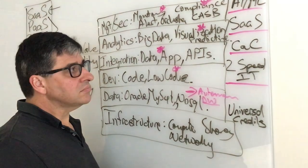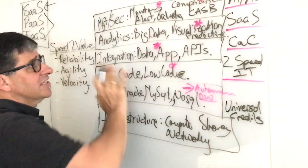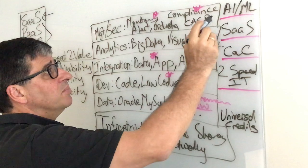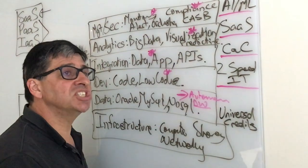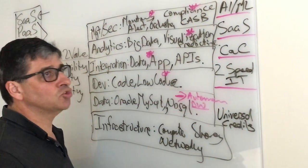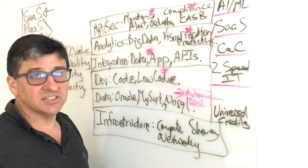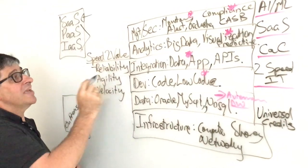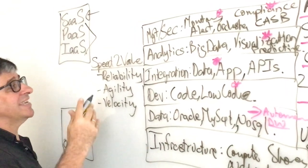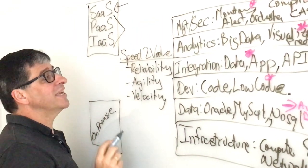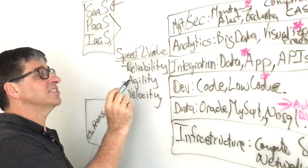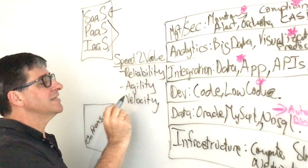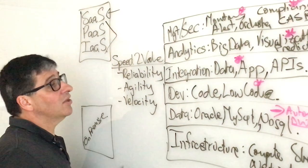Very exciting with what we've got here from a machine learning capability that's driving autonomous outcomes, which really comes back to having a set of tooling and capabilities that gives you speed to value, supporting your organization's view on reliability, agility, and velocity.